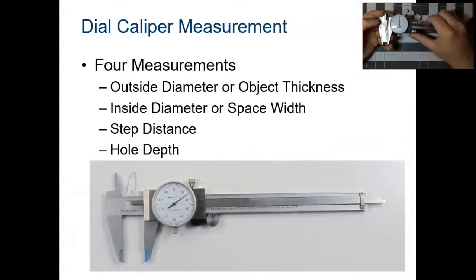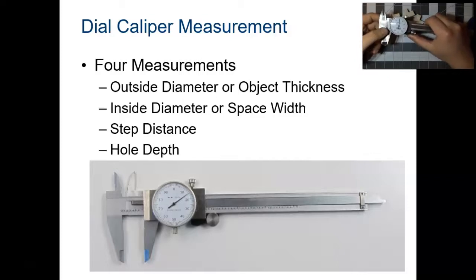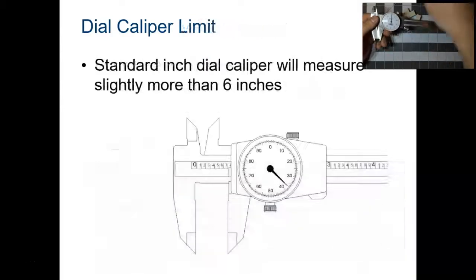There are four measurements on a dial caliper. You can measure the outside diameter of an object, the inside diameter of a hole, step distance, and hole depth. You'll see how to do that in the following slides.